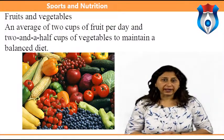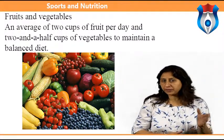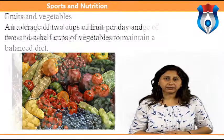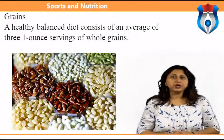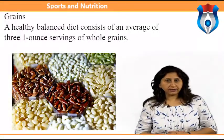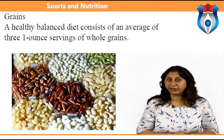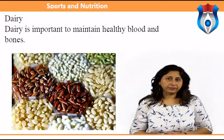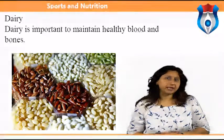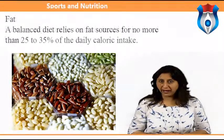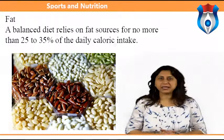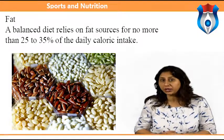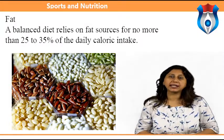One effective means of determining whether vegetable and fruit intake is balanced is to eat a variety of colors each day. For grains, a healthy balanced diet consists of an average of 3 one-ounce servings of whole grains to improve digestion and maintain energy levels. Dairy is important to maintain healthy blood and bones. Fat is necessary for ultimate health — a balanced diet relies on fat sources for no more than 25–35% of daily caloric intake.